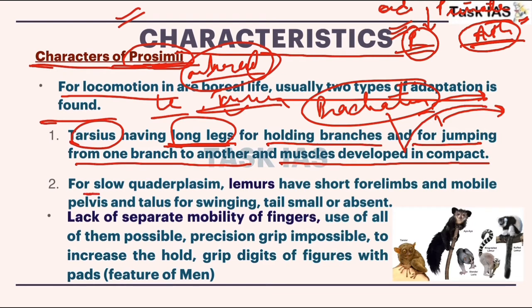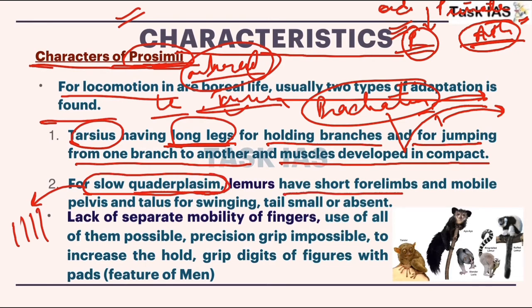For slow quadrupedalism — that means they travel on four legs — for this quadrupedalism purpose they have short forelimbs and a mobile pelvis. With short forelimbs they can travel more comfortably.